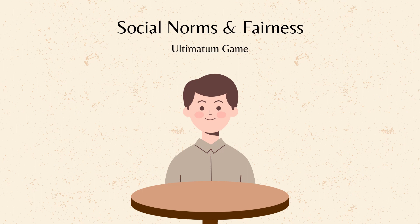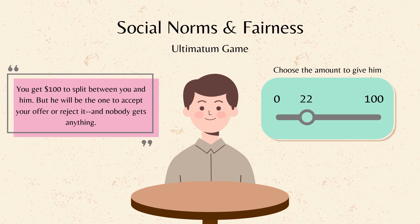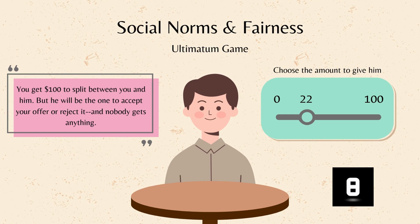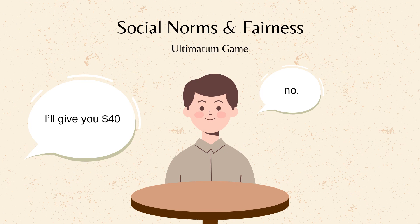Social norms and fairness. Let's imagine that you and a friend are playing the ultimatum game. You get $100 to split however you like. But there's a catch — your friend can either accept your offer or reject it, and then nobody gets anything. Classic game theory might tell you that no matter how much you give them, they will accept, since something is still better than nothing. But in experiments, people often reject unfair offers, even if it means losing out, to punish selfish behavior.